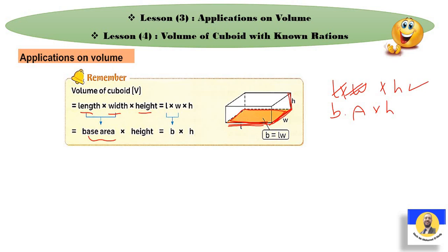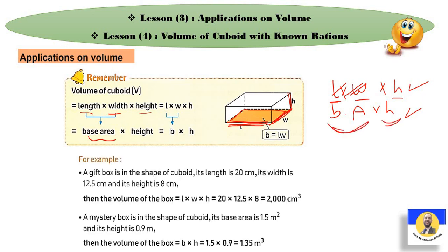So either we do length times width times height, or we replace length times width with base area times height. When do we use each? It depends on the question and the dimensions given. If you have three dimensions — length, width, height — multiply them together. If you have only two — base area and height — multiply between them to find the volume.